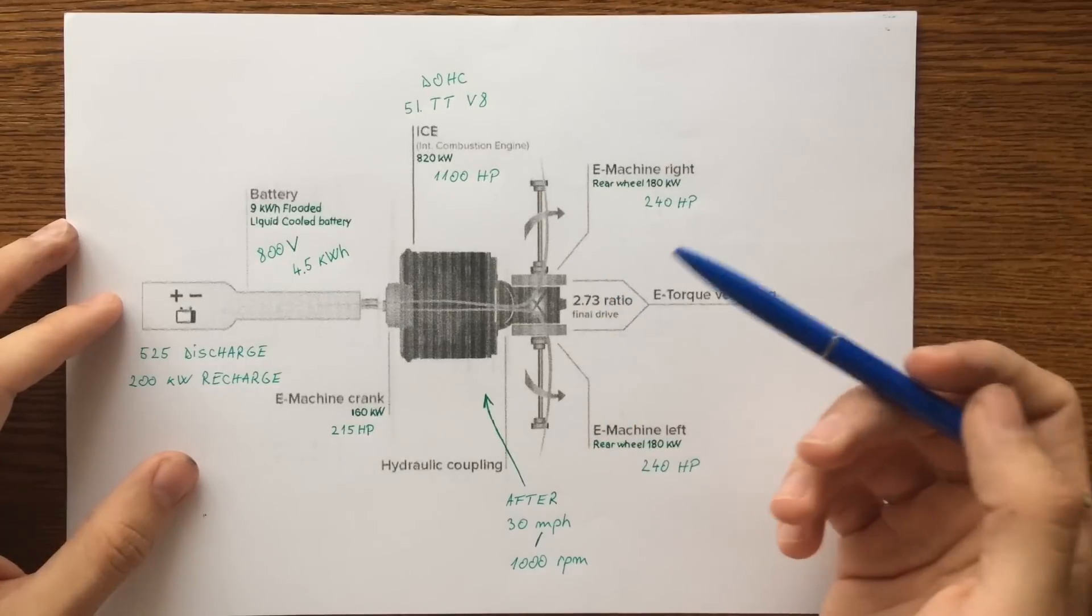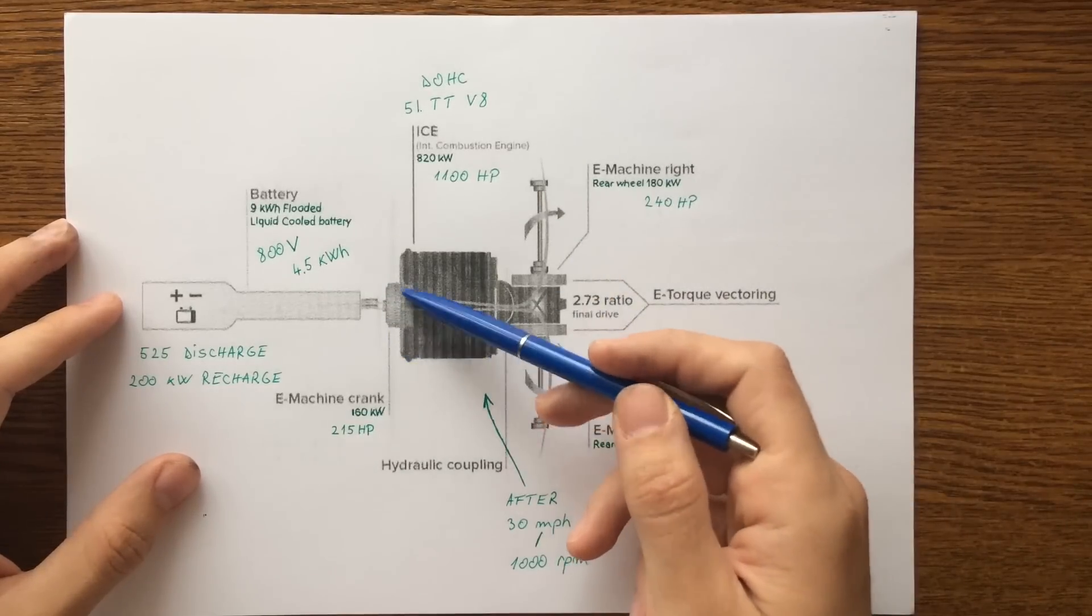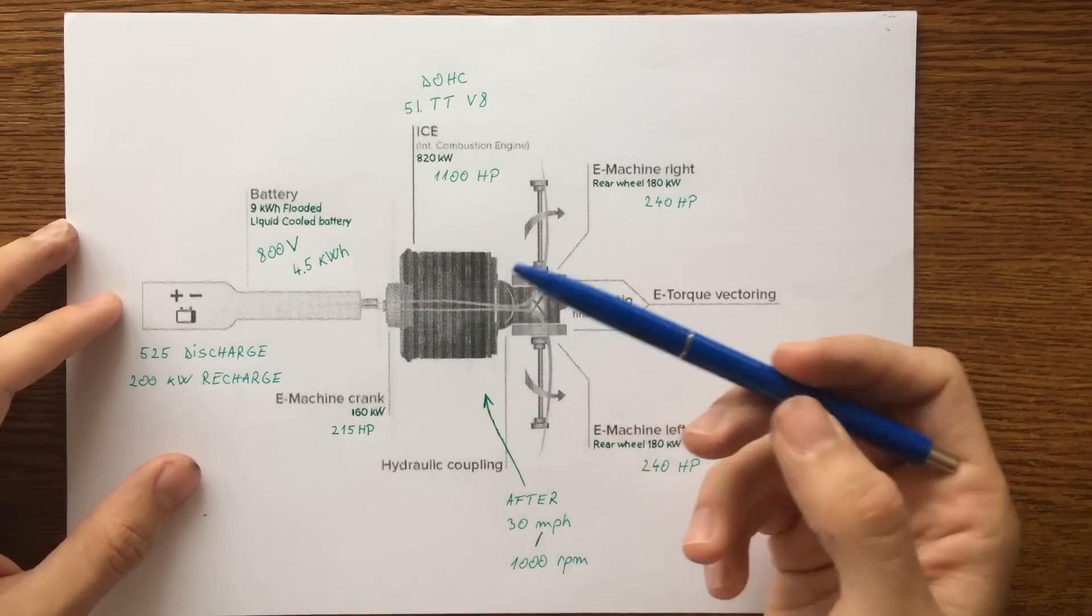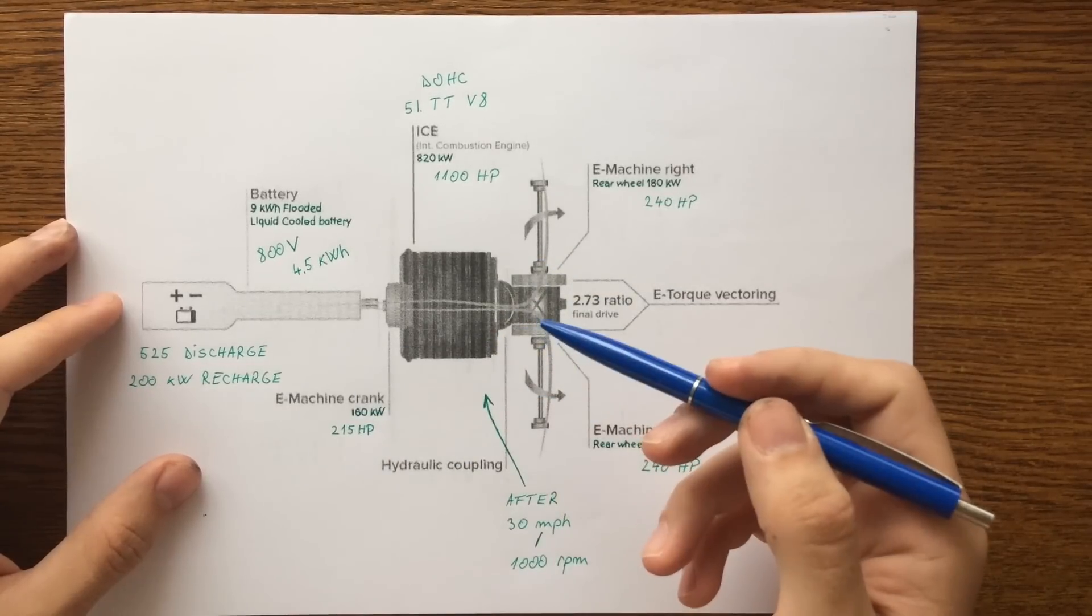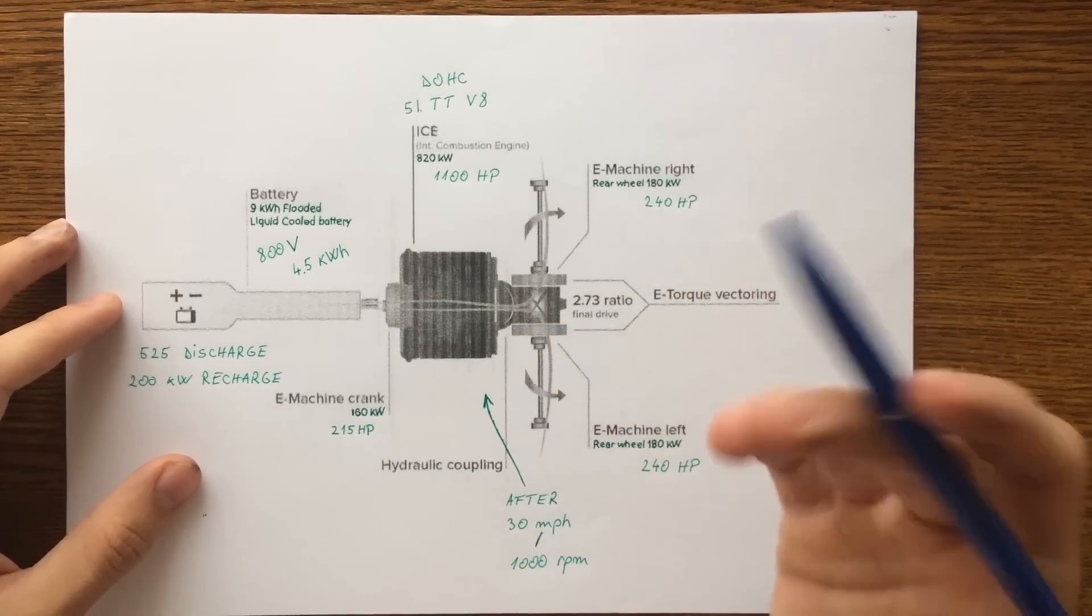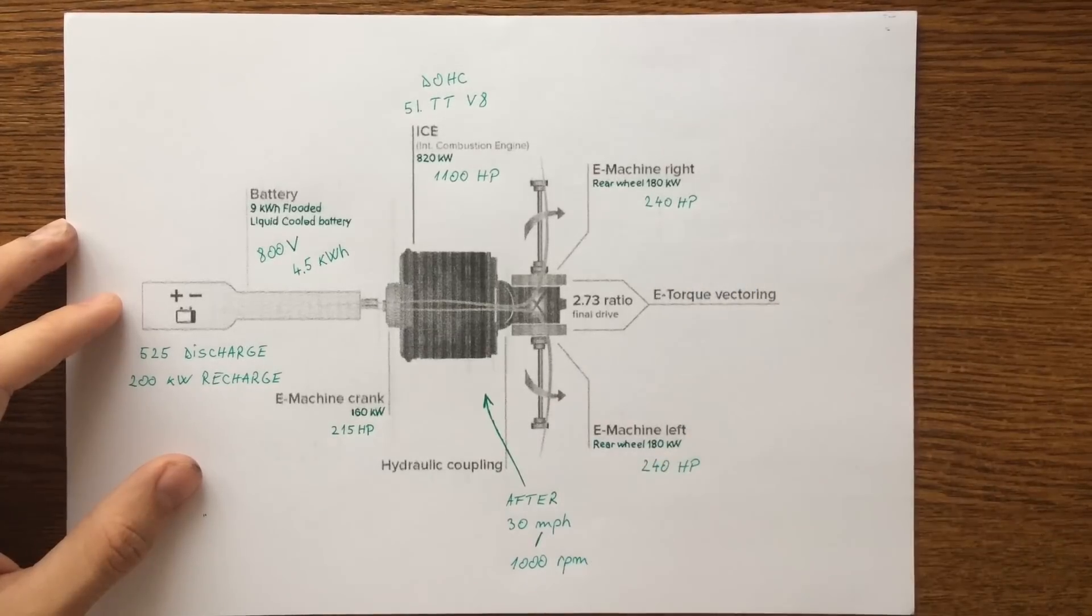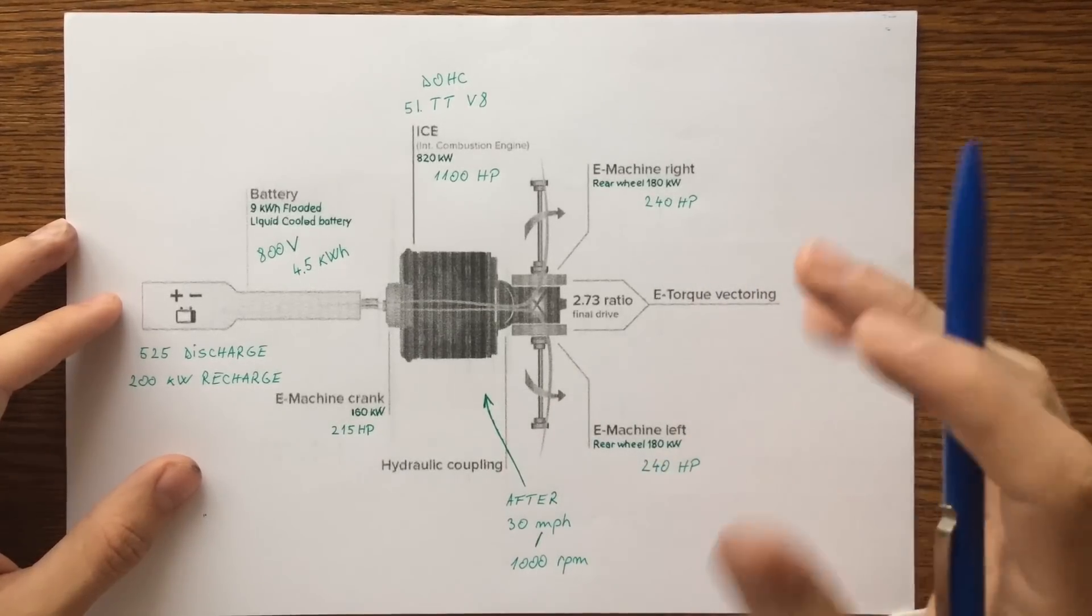Next to the battery is an electrical motor that produces around 250 horsepower or 160 kilowatt which is also a starter for the engine, a torque fill, and an electrical generator.